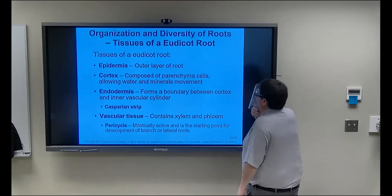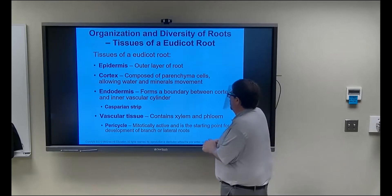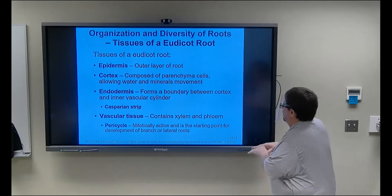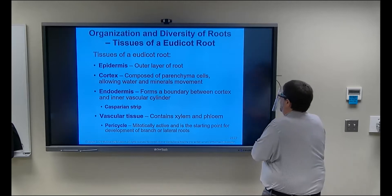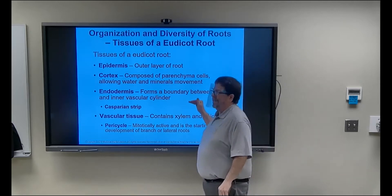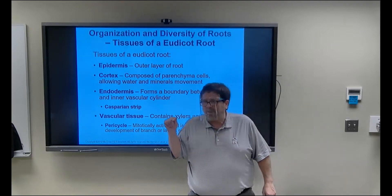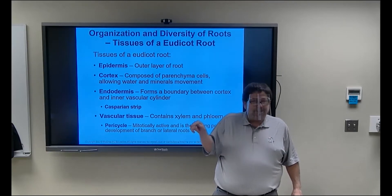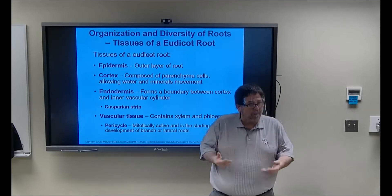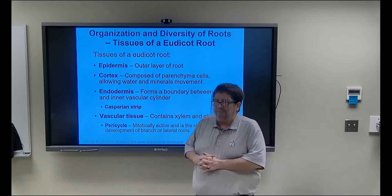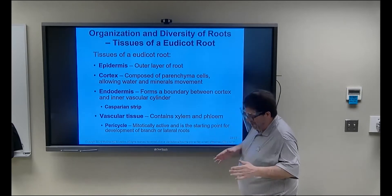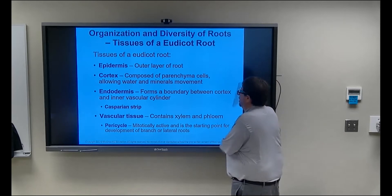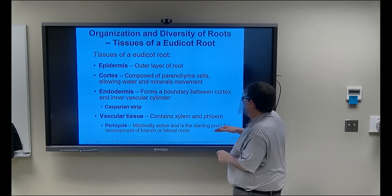The root cap contains the root apical meristem, then a zone of elongation. The epidermis is the outer layer, then the cortex. There's a layer of endodermis — important for a short-answer question — that forms the inner vascular cylinder that protects the xylem and phloem. This forms what's called a Casparian strip, which means water and minerals cannot get into the xylem without being actively transported through the cytoplasm of this layer.